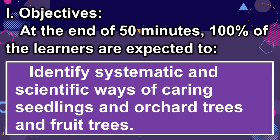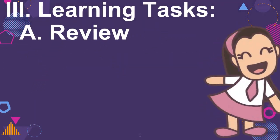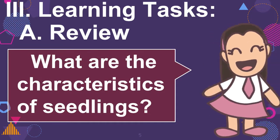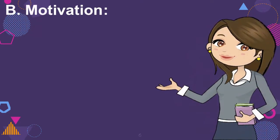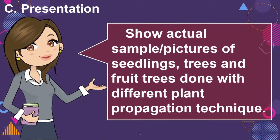Learning Tasks. A. Review: What are the characteristics of seedlings? B. Motivation: Present different kinds of pictures that show systematic and scientific ways of carrying seedlings and orchard trees and fruit trees. Let the pupils say something about the picture.